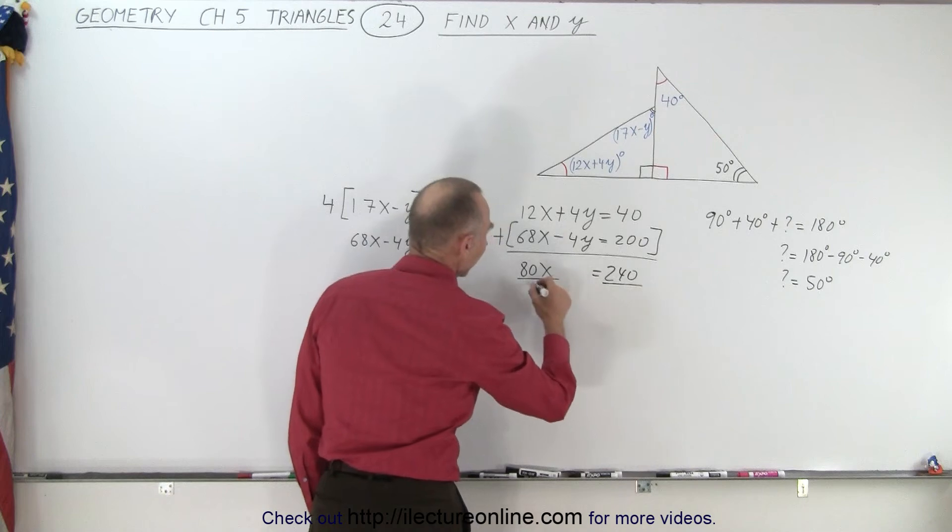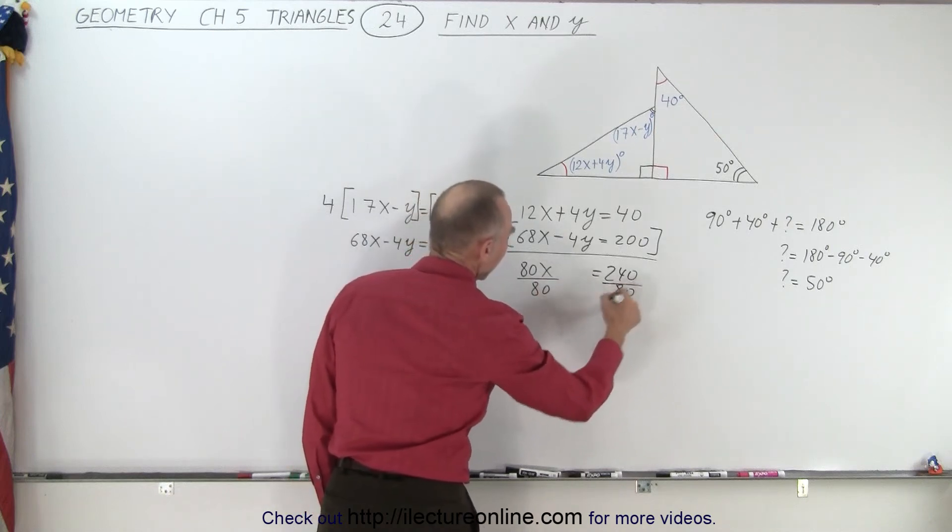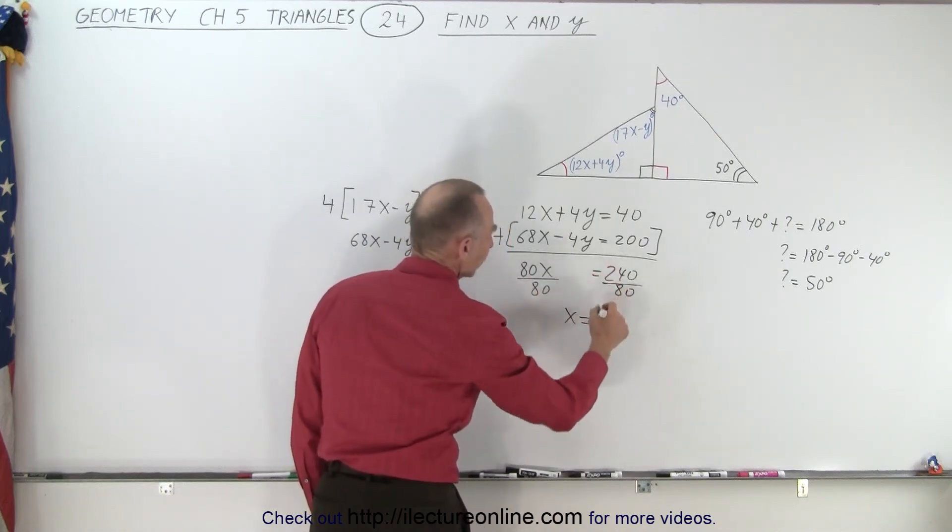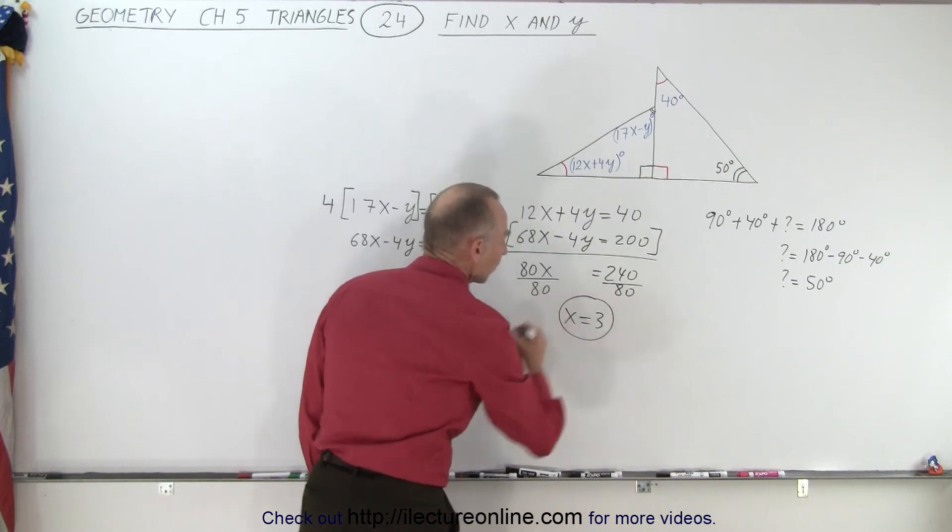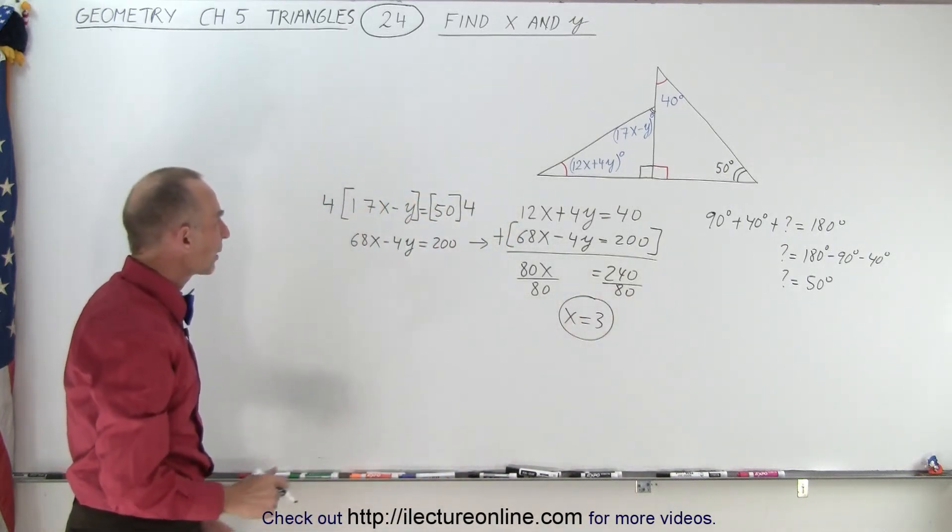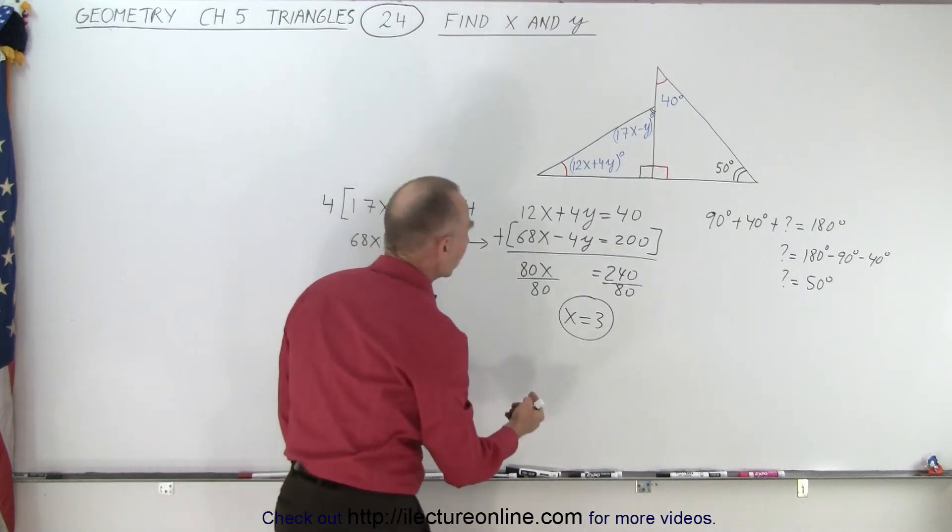Now I can divide both sides by 80 and therefore x is equal to 240 divided by 80 which is 3. So now I have a value for x. Then I can plug that back into one of my two equations.